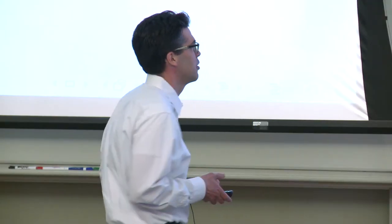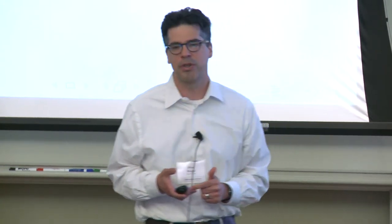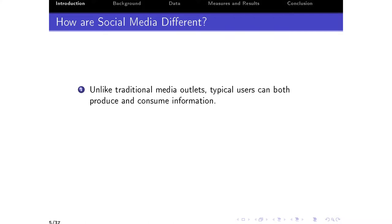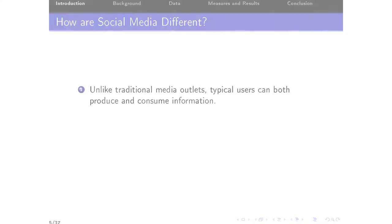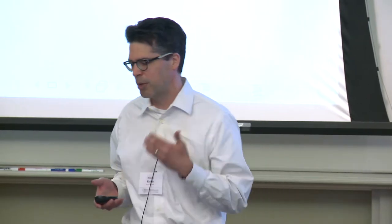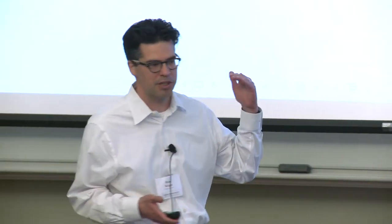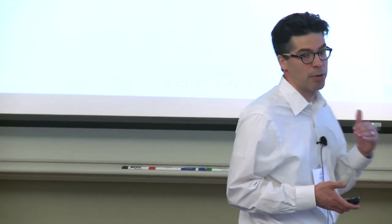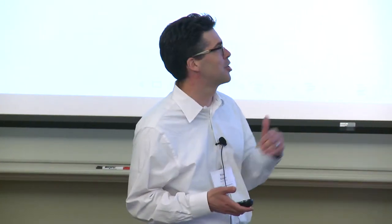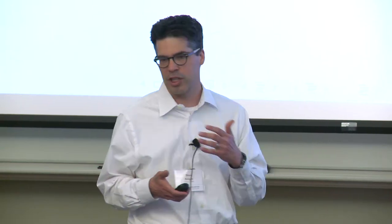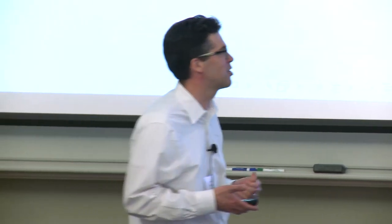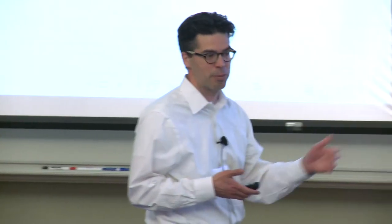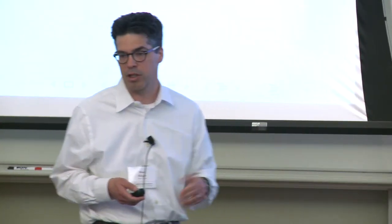From a conceptual viewpoint, I want to think about how social media are different, emphasizing three points. First, unlike traditional media outlets, typical users can both produce and consume information. If I think about CBS Evening News, there's a clear vertical relationship — CBS is producing information and I'm home watching TV consuming it. On social media, by contrast, if I'm on Twitter I can produce information via tweets, I can share information from other users, but at the same time I'm a consumer of information.